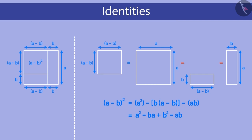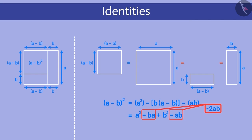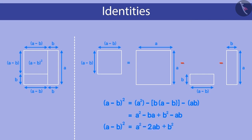Looking at these terms again — they are equal to each other. So solving further, minus ab and minus ba become minus 2ab. Hence, we get a minus b raised to the power of 2 equal to a² minus 2ab plus b².